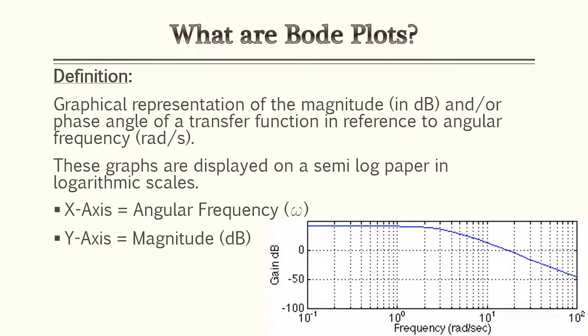For this lesson we'll be going over the fundamentals of Bode plots. Bode plots are a graphical representation of the magnitude and/or phase angle of a transfer function in reference to angular frequency, which is measured in radians per second. These graphs are displayed on semi-log paper in logarithmic scales. The gain, measured in decibels, is on the y-axis, and the x-axis is your angular frequency in radians per second.